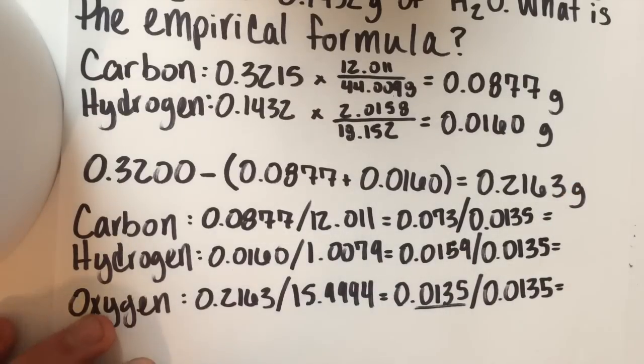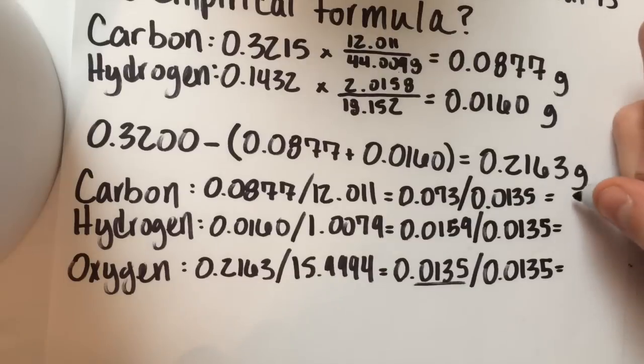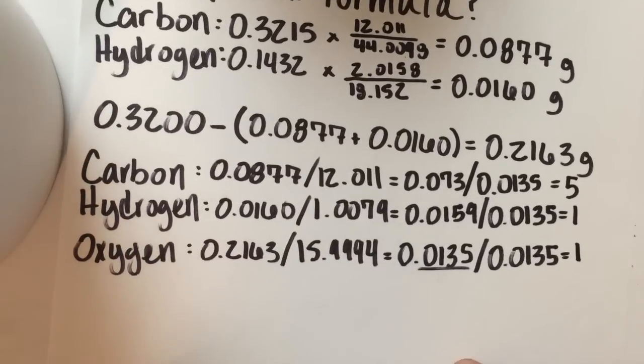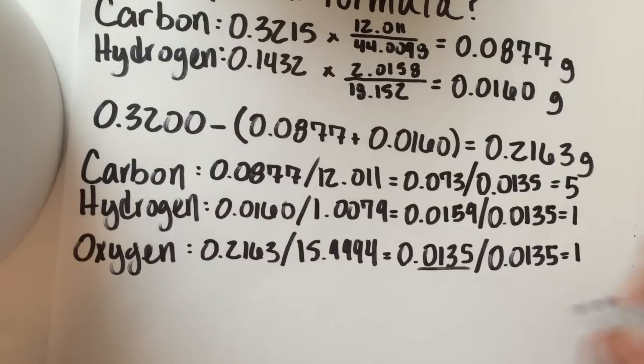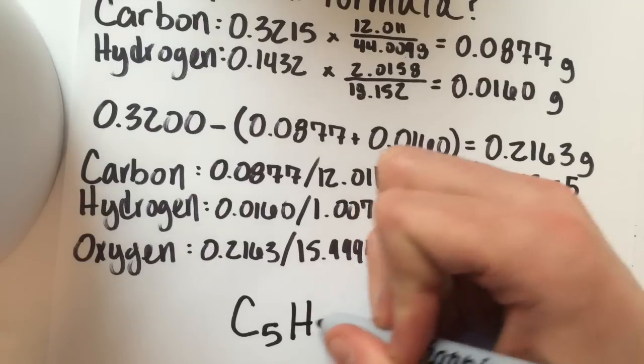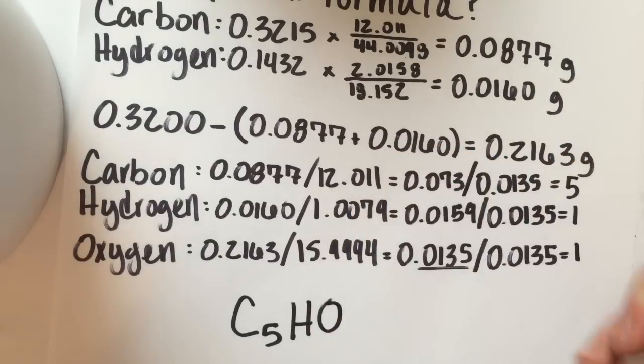And that is going to leave you with 5 carbons, 1 hydrogen, and then oxygen divided by itself is just going to be 1. So now you have your formula, since you have 5 carbons, 1 hydrogen, 1 oxygen. Your formula is going to be C5H1O1.